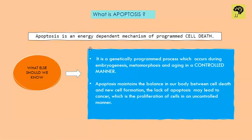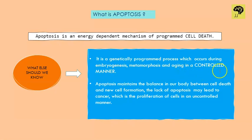Apoptosis happens during embryogenesis when we are inside the mother's womb, during metamorphosis, and in aging — we age because our cells die, which is a prominent example of apoptosis. All this happens in a very controlled, regulated manner, making it a very tidy process. If it doesn't happen in a regulated manner, all our cells would die and we would not survive, so apoptosis is really important.